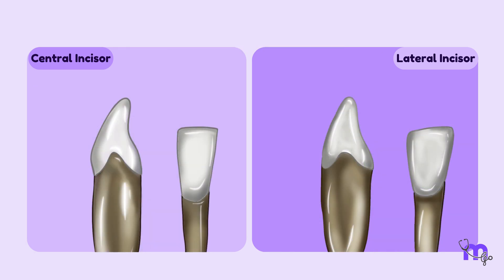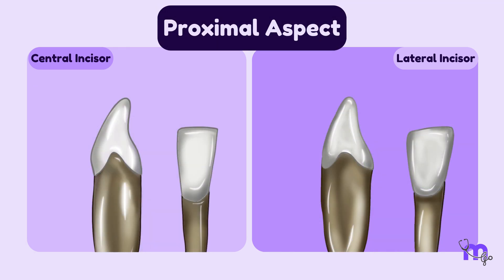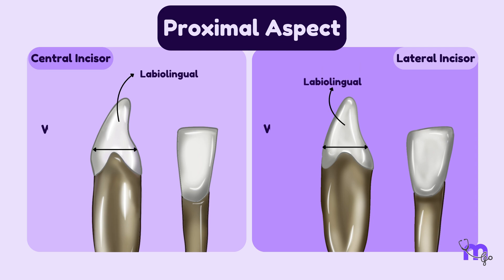Now, let's shift our focus to the proximal aspects of these teeth. In both cases, we can observe that their labio-lingual dimensions are wider than their mesiodistal dimensions.